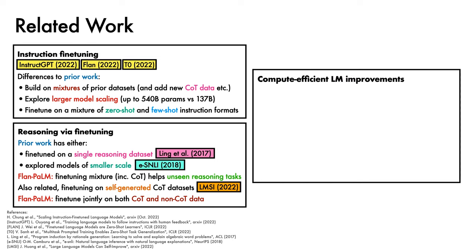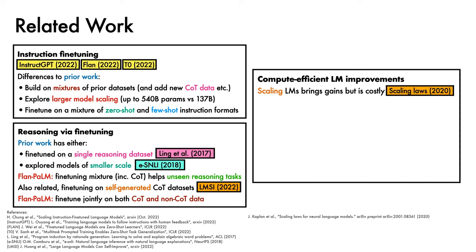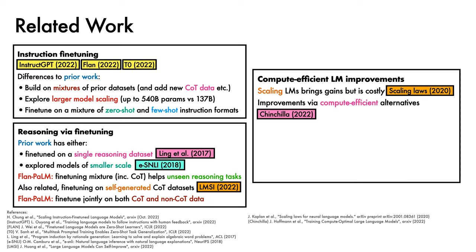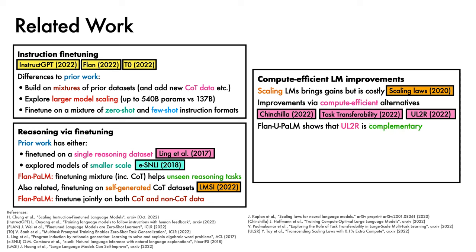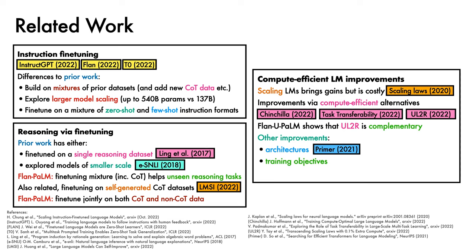A third line of prior work has focused on compute-efficient language model improvements, motivated by the observation that scaling language models brings gains but is costly, as highlighted by the scaling laws work of Kaplan et al. There have therefore been a range of efforts to achieve improvements via compute-efficient alternatives. These include Chinchilla, explorations on task transferability, and UL2R. Among these, Flan-UPaLM shows that UL2R is complementary to instruction fine-tuning. Other related improvements in the literature include better architectures like Primer, better training objectives like UL2, and better data as studied in GLaM.